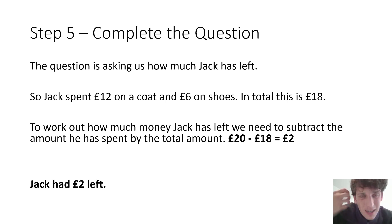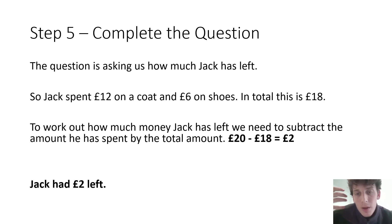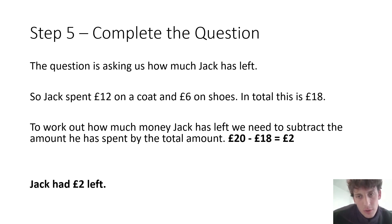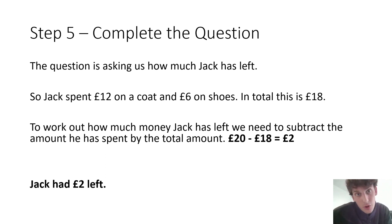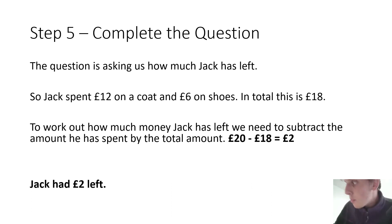Step five is to complete the question. The question asks how much Jack has left. Jack spent 12 pounds on a coat and six pounds on shoes — in total that is 18 pounds. To work out how much money Jack has left, we subtract the amount he has spent from the total: 20 pounds minus 18 pounds leaves us with two pounds. So Jack has two pounds left. And that, ladies and gentlemen, is how we work out a problem-solving question.